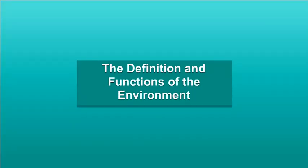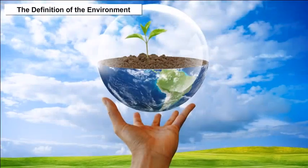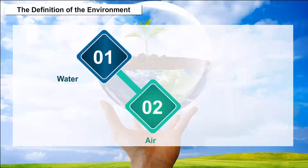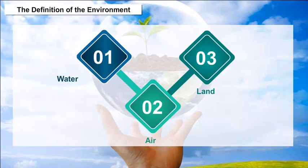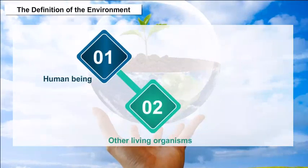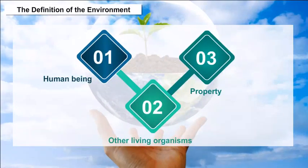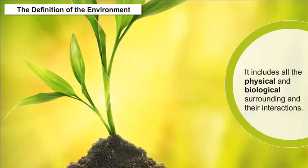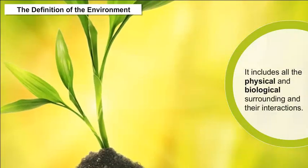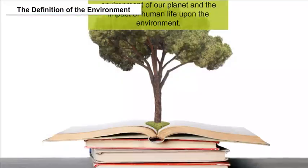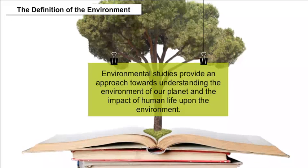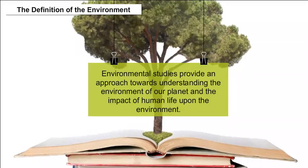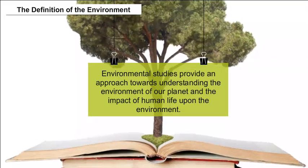The Definition and Functions of the Environment: Environment is a sum total of water, air and land, their interrelationships among themselves and also with human beings, other living organisms, and property. It includes all the physical and biological surroundings and their interactions. Environmental studies provide an approach towards understanding the environment of our planet and the impact of human life upon the environment.